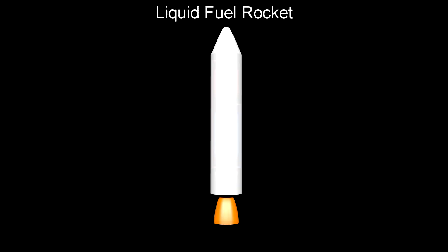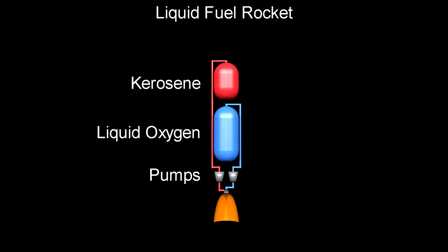In a liquid-fuel rocket, such as one using kerosene and liquid oxygen, the two liquids are mixed together and then burned. An advantage of this over the solid fuel rocket is that it can be turned on or off as needed.